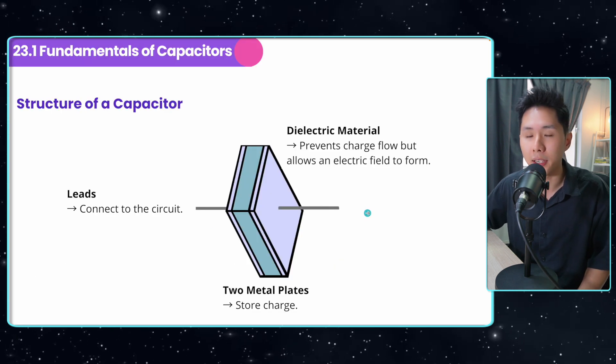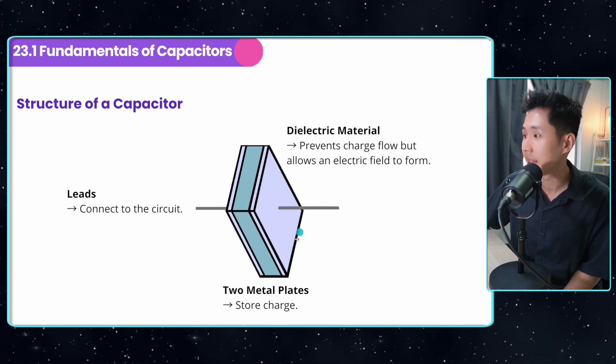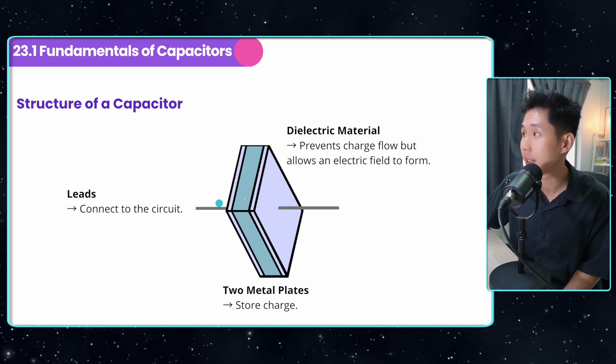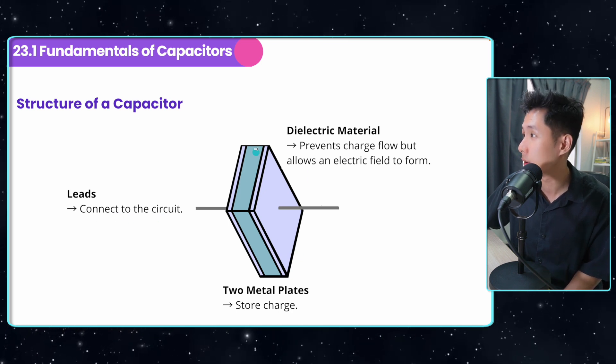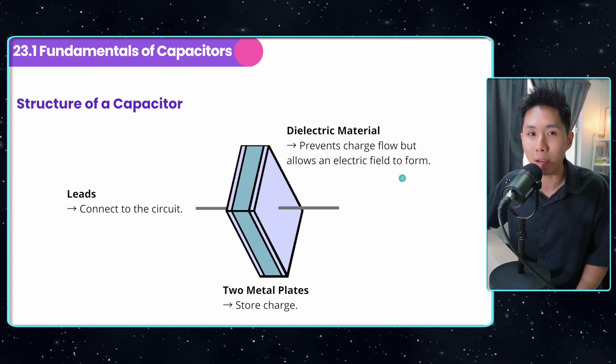Now let's look into the specification of how it looks like. So in a capacitor, you have two metal plates that are used to store charges, and you have leads that connect to the circuit, and dielectric material that prevents charge flow but allows an electric field to form, which is pretty complex, but bear with me.